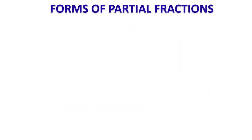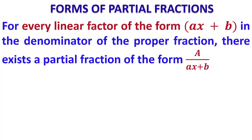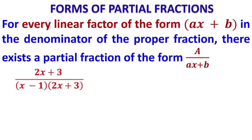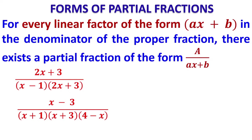For Type 1: for every non-repeated linear factor of the form (ax + b) in the denominator, there exists a partial fraction of the form A/(ax + b). For example, (2x + 3)/[(x - 1)(2x + 3)] has two linear factors, both non-repeating. Similarly, (x - 3)/[(x + 1)(x + 3)(4 - x)] — first check whether it is proper or improper.